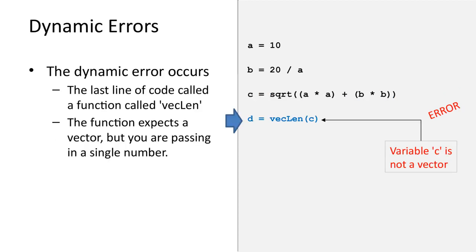Once both static errors are fixed, the code can be executed. The first three lines of code will then be executed without any errors. When execution reaches the fourth line of code, it will discover a dynamic error.